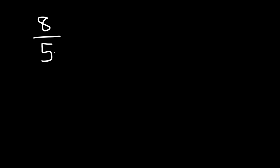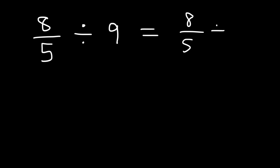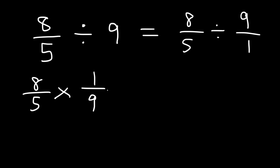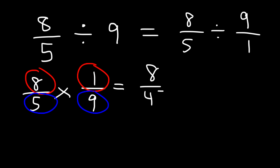Now let's say we have an improper fraction and we wish to divide it by a whole number, like 9. The first thing we need to do is rewrite the whole number as a fraction — 9 is the same as 9 over 1. Then we apply keep-change-flip: keep the first fraction the same, change division to multiplication, and multiply by the reciprocal. 8 times 1 is 8, and 5 times 9 is 45. So the answer is 8 over 45, which we can't simplify.